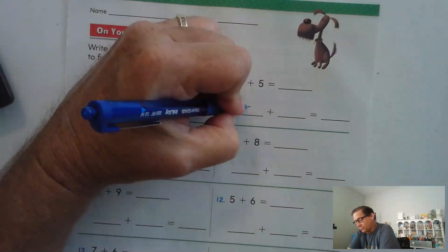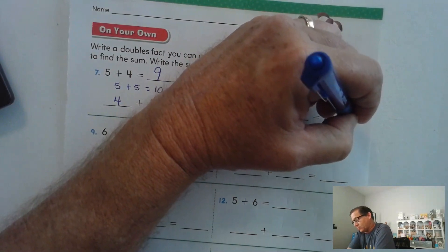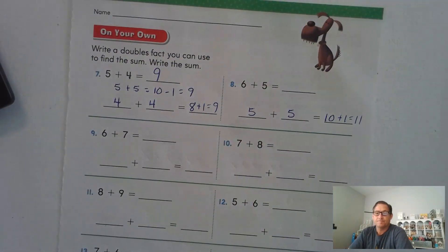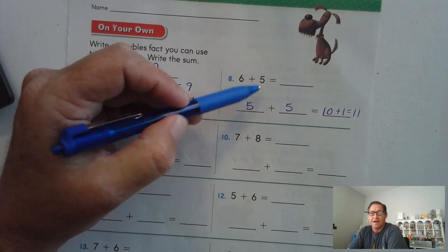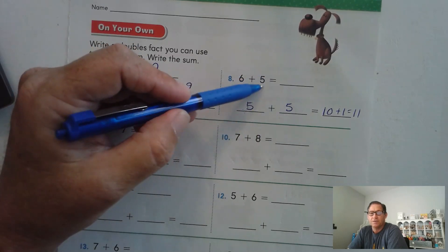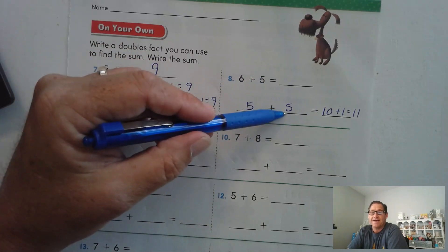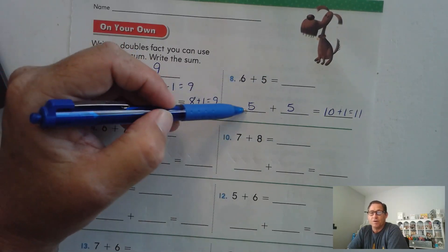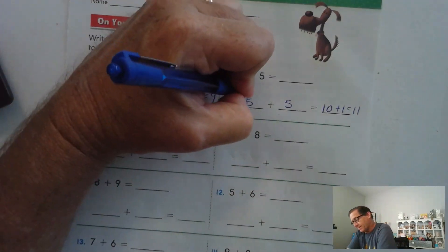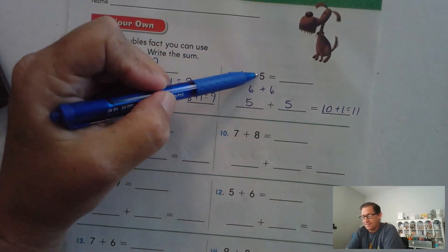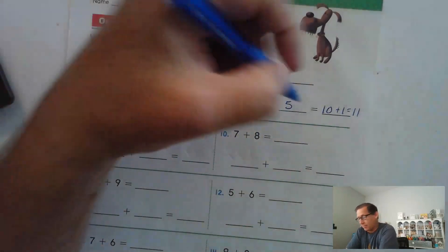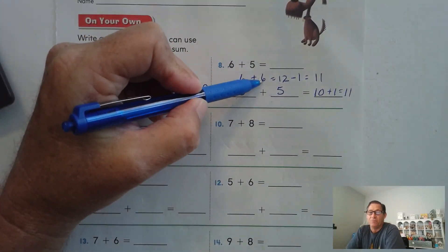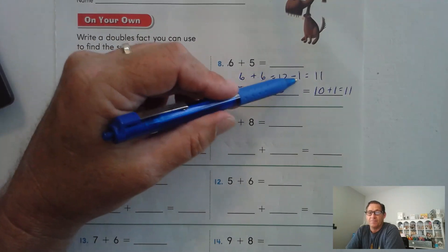6 plus 5: that's 5 plus 5 plus 1. We subtracted 1 in our head from the 6 to give us 5 and 5, because we wanted a double fact. 5 and 5 is 10, and then I add back the 1 I took away from the 6. So 10 plus 1 is 11. If I use 6 as the double fact, I'm making the 5 one bigger — 6 plus 6 is 12, but I subtract the 1 because I changed the 5 to a 6 by adding 1.